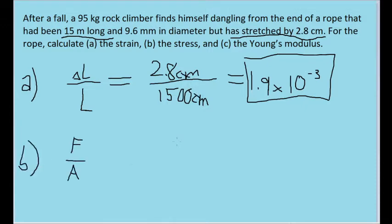Part B asks us for the stress on the rope. Now stress is defined similarly to pressure. It's an amount of force divided by the area over which that force is acting. In this case, our force is just the weight of the rock climber, since the climber's weight is being applied to the rope.